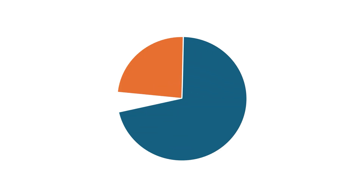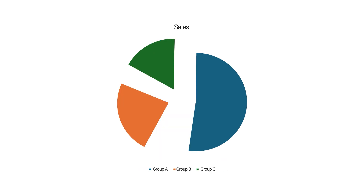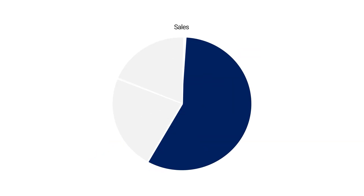Here's how to do it right: limit to two or three slices maximum. Never explode the chart — it's unnecessary and distracting. If you want to highlight one slice, like the biggest cost center or the biggest region, color it differently. Everything else stays neutral. The pie chart is about showing the message, so forget about using all the colors.